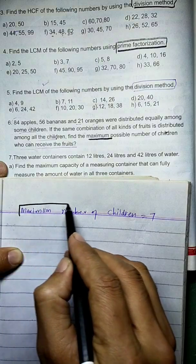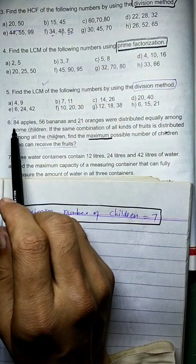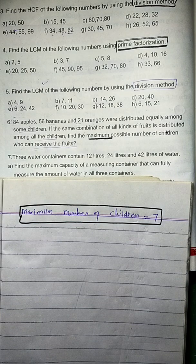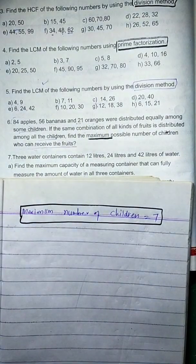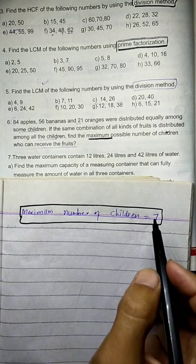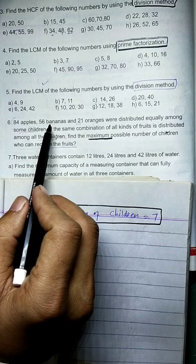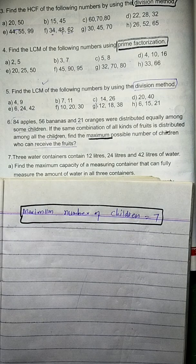The answer is: maximum number of children is equal to 7. This means the fruits are distributed among 7 children. Each child receives 12 apples, 8 bananas, and 3 oranges. Every child gets the same combination.